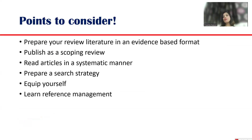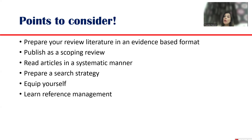How to read an article: first look at the title — whether it's important for you and related to your research question. Then read the abstract and look for the summary and conclusion. Look for research gaps or clear-cut aims and objectives, because from the research gap the aims and objectives are formulated. Then the hypothesis, the conclusions, and later the entire article has to be read if everything fits your criteria. Points to consider: prepare your review of literature in an evidence-based format based on a pre-formed search strategy, publish it as a scoping review, and equip yourself with PubMed databases, MeSH terminology, Boolean terminologies, and reference management software like Zotero or Mendeley.